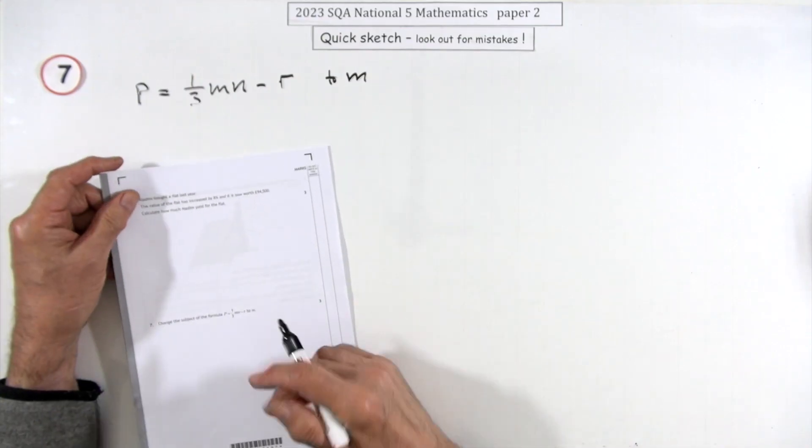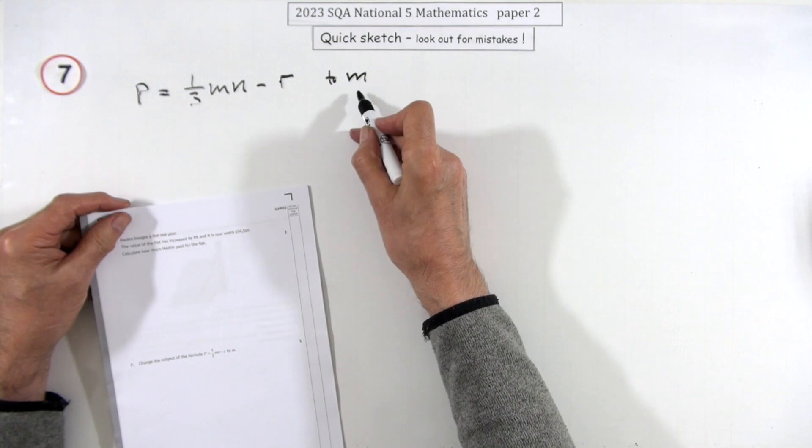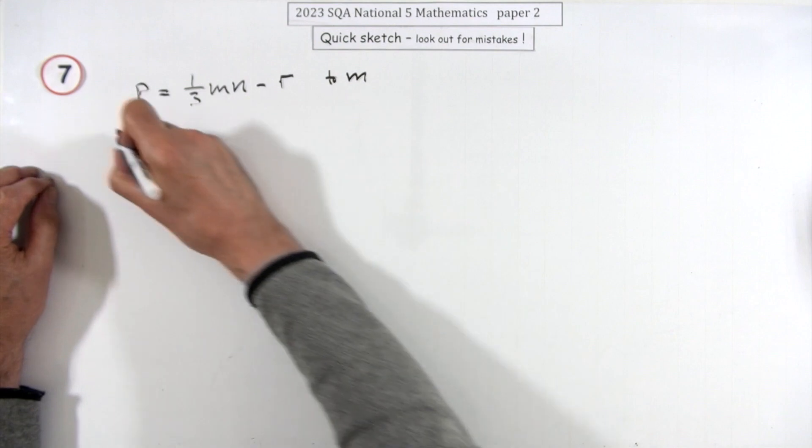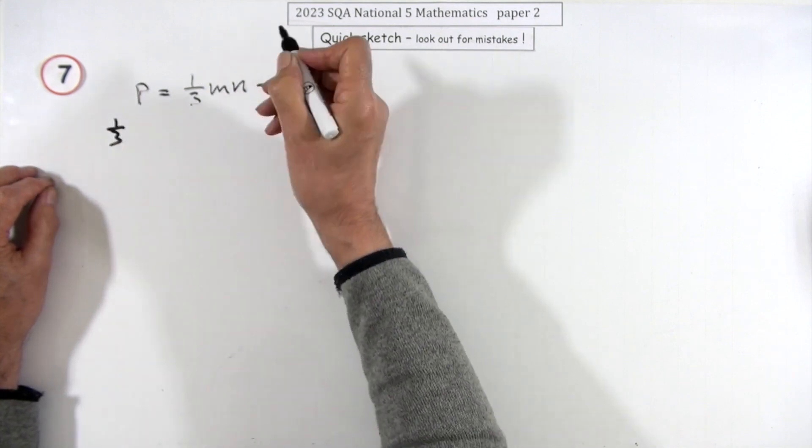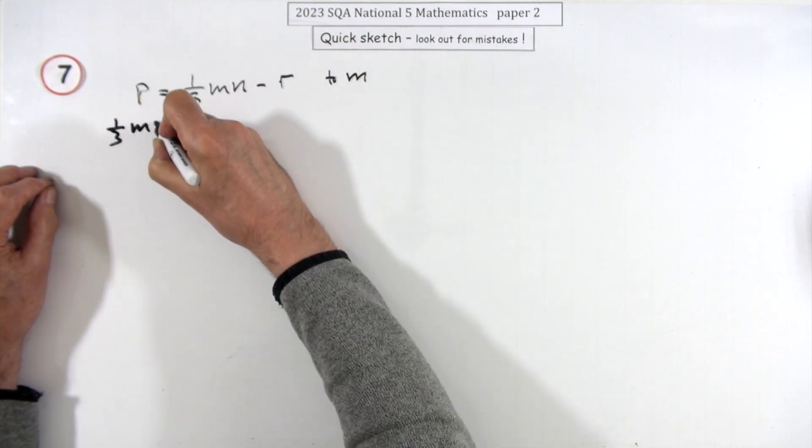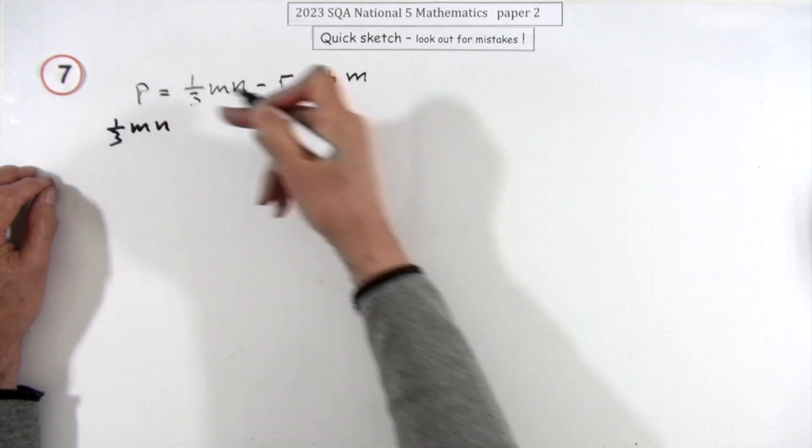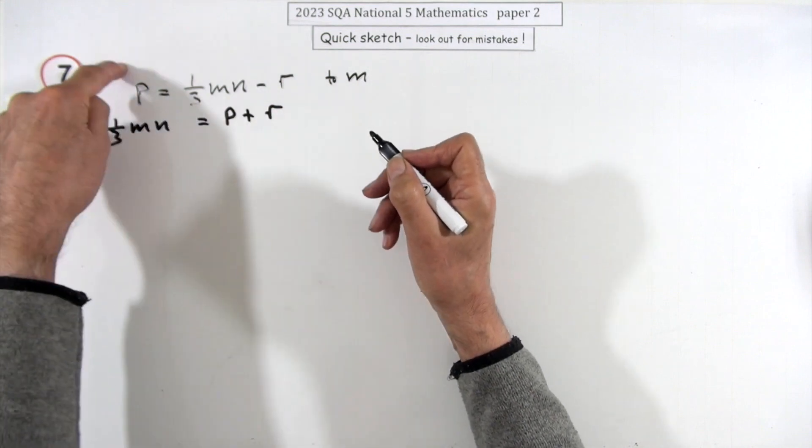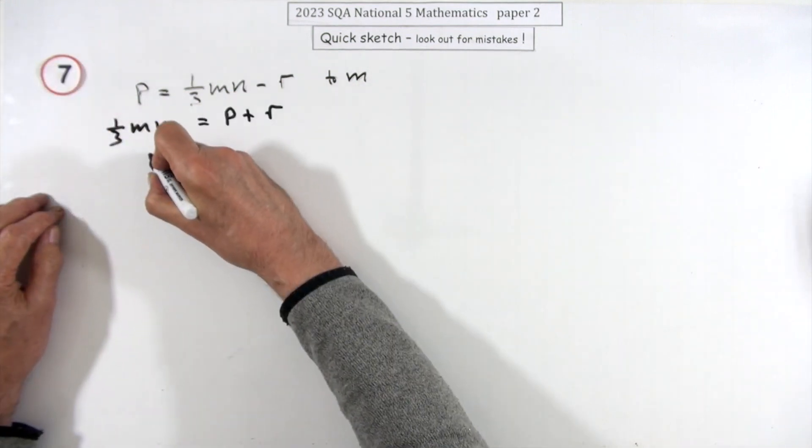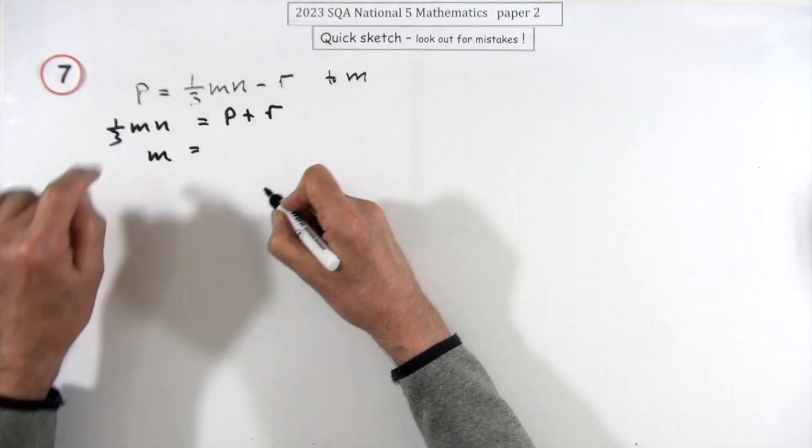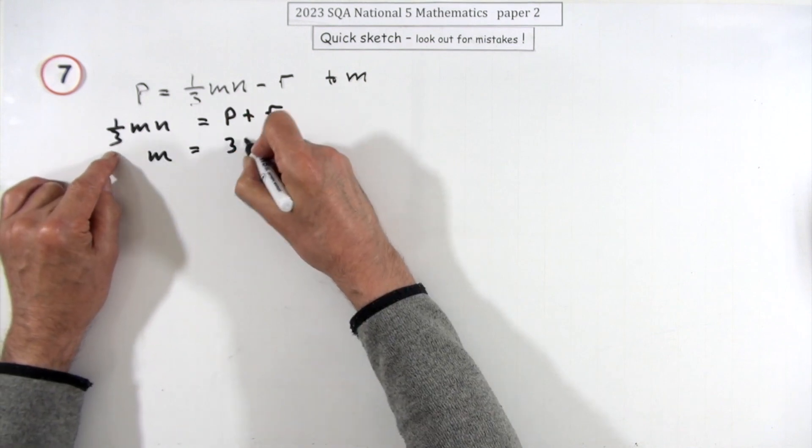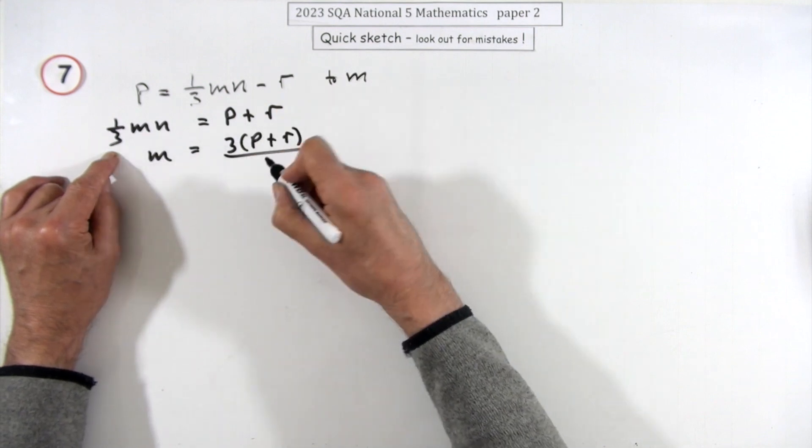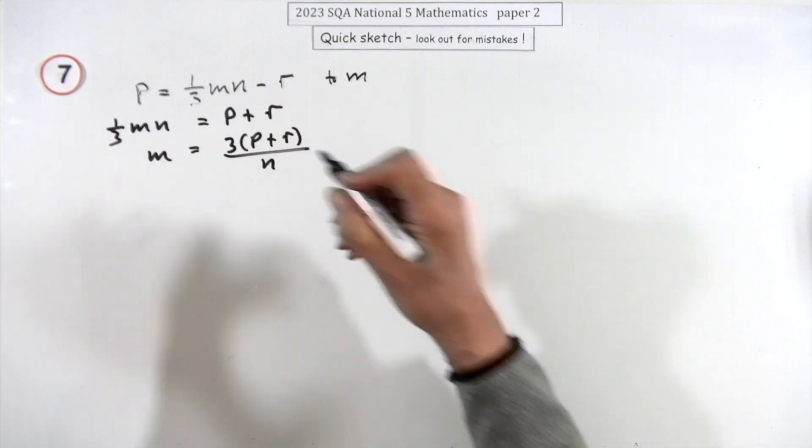Number seven. Change the subject of the formula to M. Well it just means you want M on its own over here. I'll just write it backwards. Could do multiply by 3 first. One-third of MN, reading it this way, would be the P plus the R. So I've just taken that over and added it and read it backwards. To get M on its own, I just want rid of these two parts. So take the 3 across and multiply: 3(P + R), would be the best way to put it, divided by N. That's it.